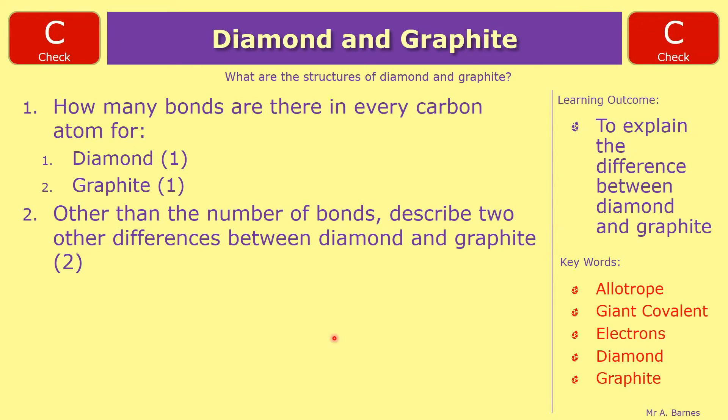Okay, let's have a look at the answers then. So diamond, you should have got, has four bonds for every carbon atom. And graphite has three.